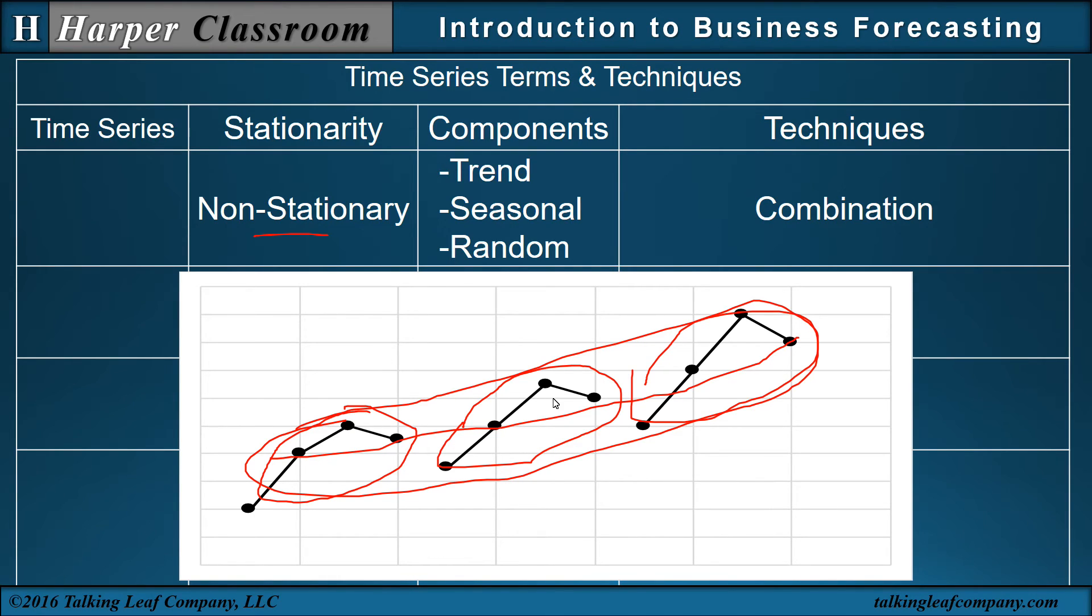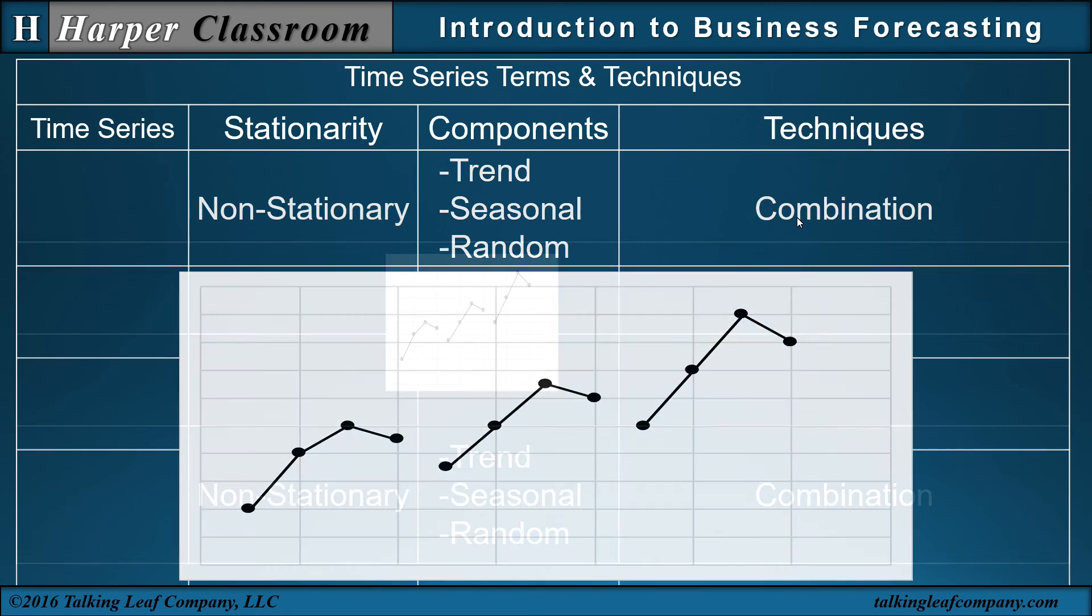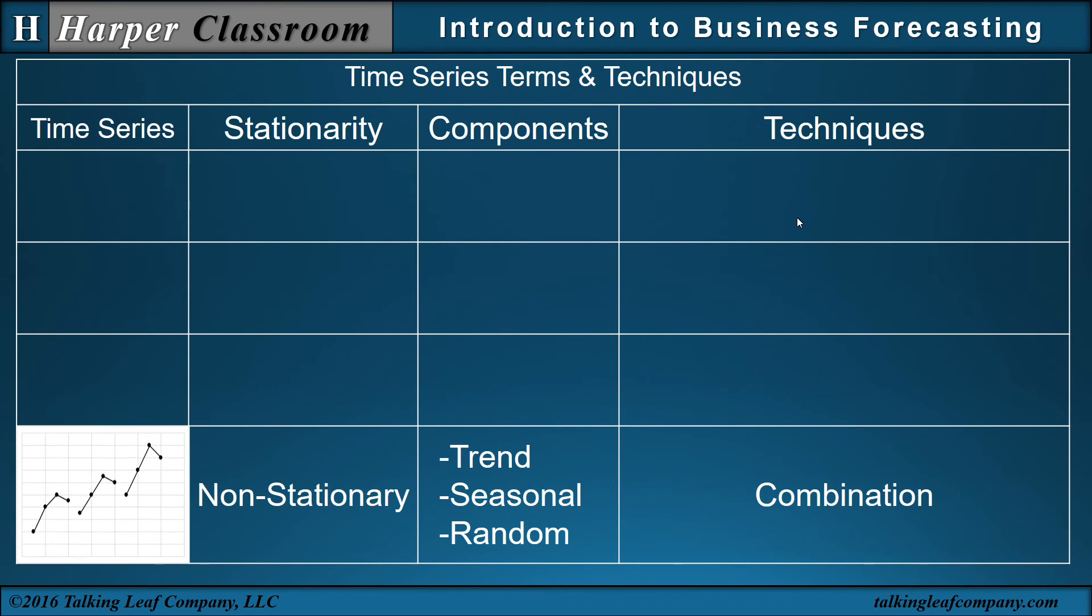But then that pattern is not exactly the same every year, so we have a random component. So in this case, the technique of preference is going to be the combination of these techniques. We're going to combine the regression, the moving average, and the seasonal indexes. We'll combine all three. And that's the fourth time series.